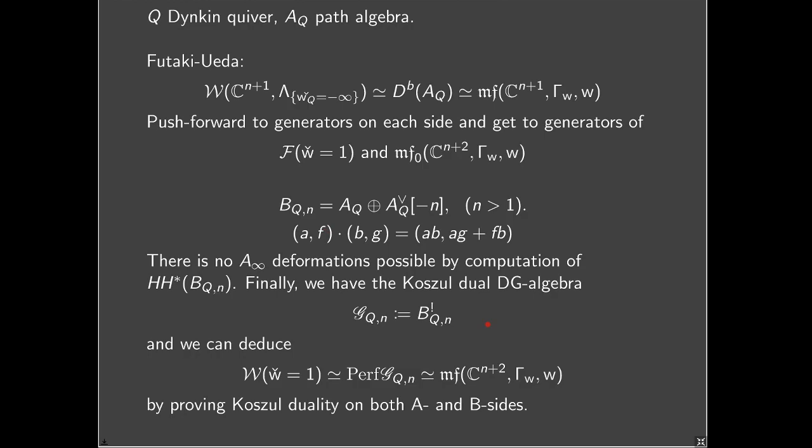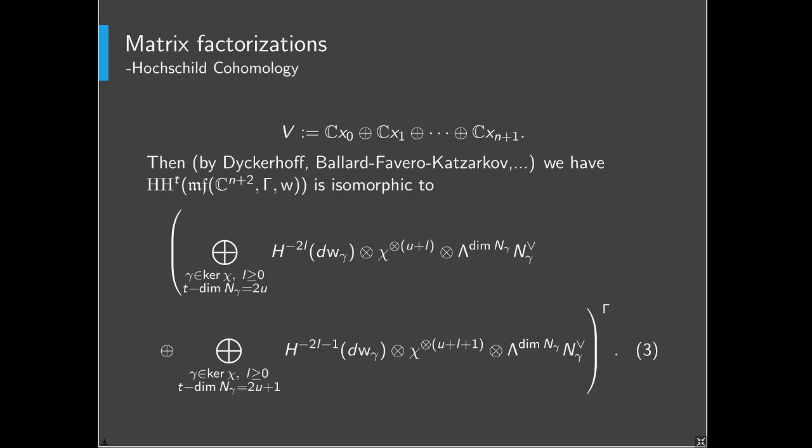For the wrapped category, as I said, there is Koszul duality. You apply Koszul duality to both sides, and in the end you get perfect complexes on the Ginzburg algebra, and we have both the A-side and B-side completely. So these are all proven theorems. One thing I didn't explain is how I computed this Hochschild cohomology.